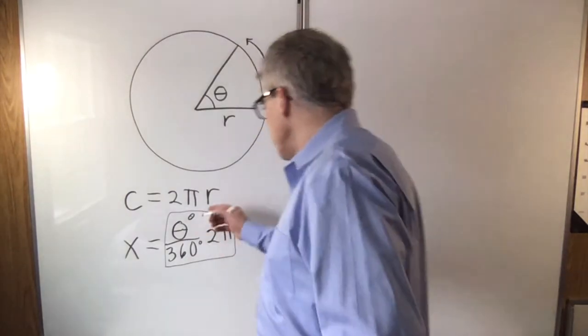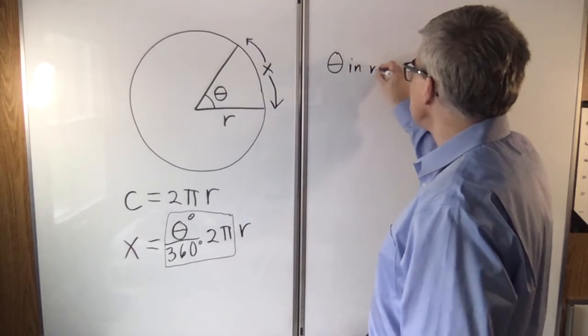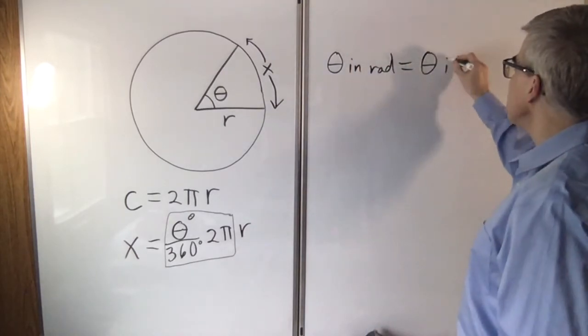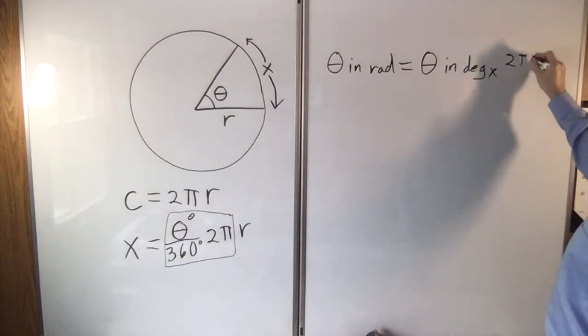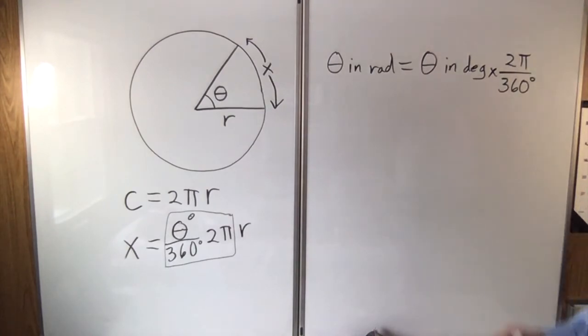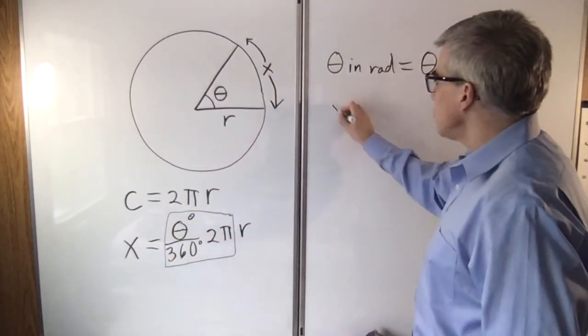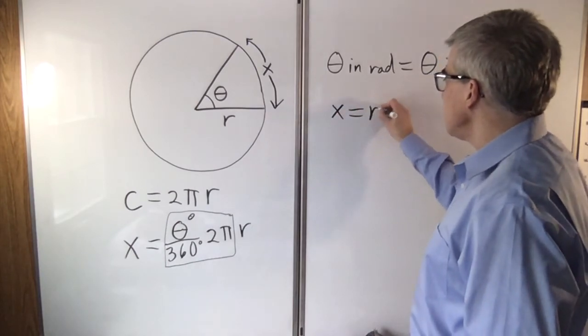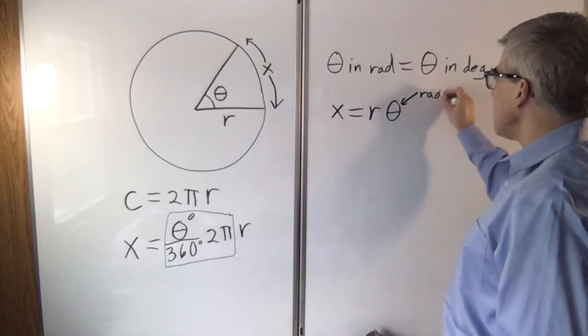Radians were defined so that theta in radians equals theta in degrees times 2 pi over 360. That's the whole idea, so that this whole mess becomes theta in radians. And we get x equals r times theta, but that theta has to be in radians.